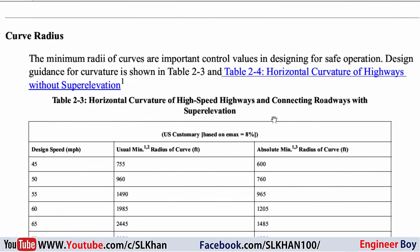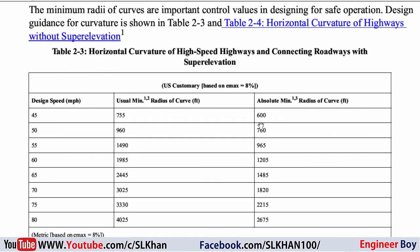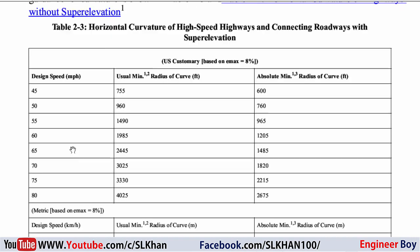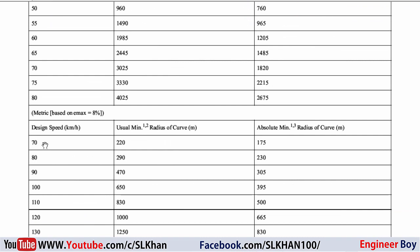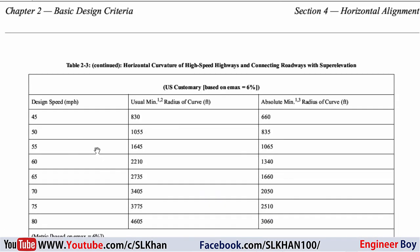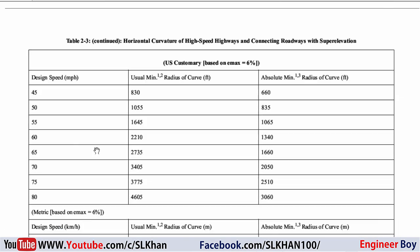These tables can be referenced for any design speed. If you don't find a value for your specific design speed in the table — for example, there's no value listed for 30 or 20 km/h since the table starts from 70 — you can work it out using the ratio method or proportion.